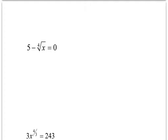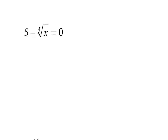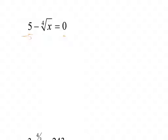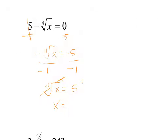There are little things that can change, but the steps are the same. First I get rid of the 5 by subtracting 5 from both sides. That negative is still there, so it's a negative 4th root of x equals negative 5. I divide everything by negative 1, so the 4th root of x equals positive 5. To get rid of the 4th root, I raise both sides to the 4th power. The 4th root and the 4 cancel, so x equals 5 to the 4th, which is 625. If you check that, you'll find it works out.